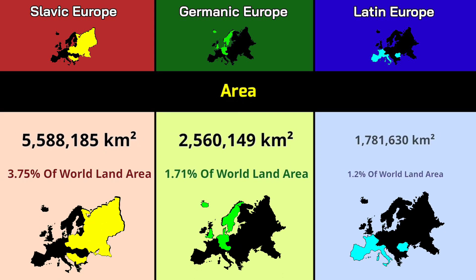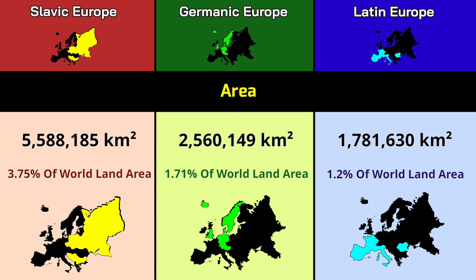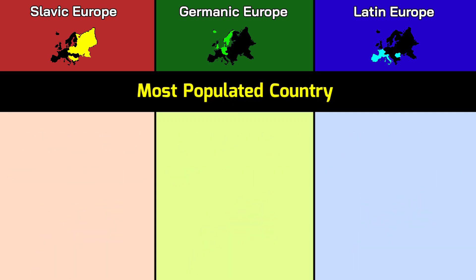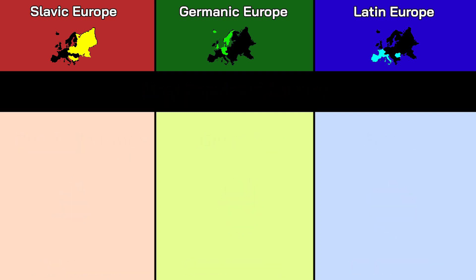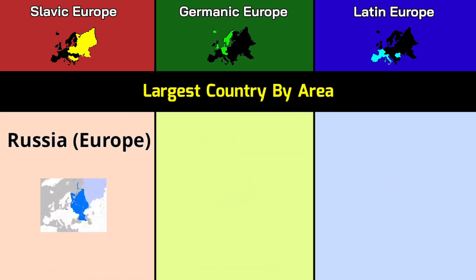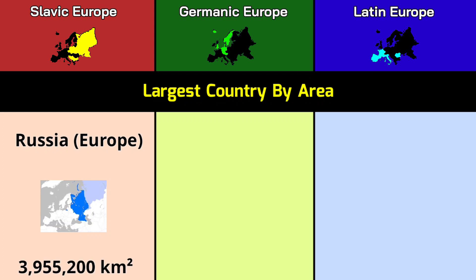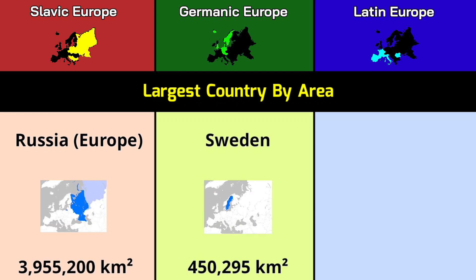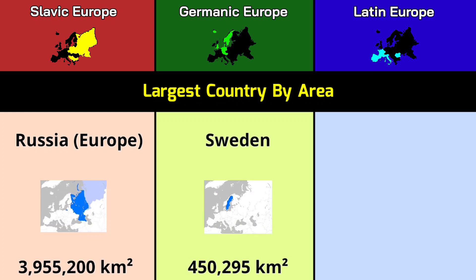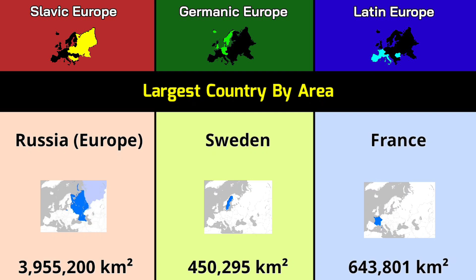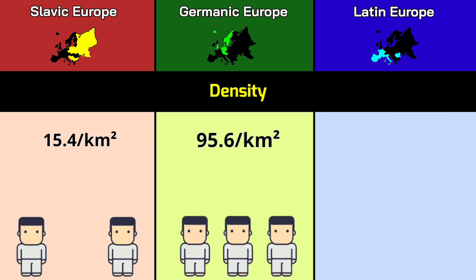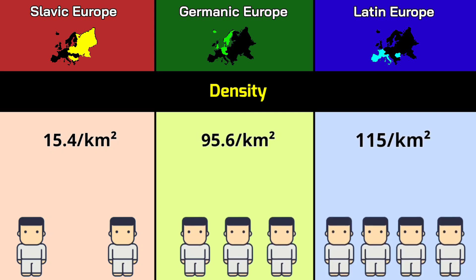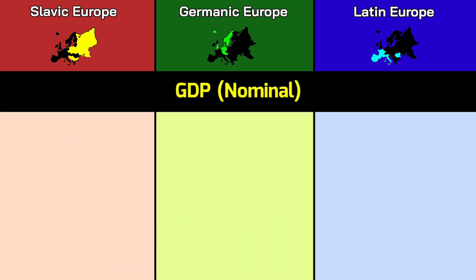Area: 5.58 million square kilometers, 2.56 million square kilometers, 1.78 million square kilometers. Most populated country: European part of Russia 110 million, Germany 84.2 million, France 65.5 million. Largest country by area: European part of Russia 3.95 million square kilometers, Sweden 450,300 square kilometers, France 643,800 square kilometers. Density: 15.4 per km², 95.6 per km², 115 per km².